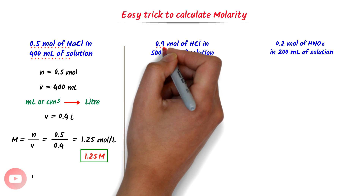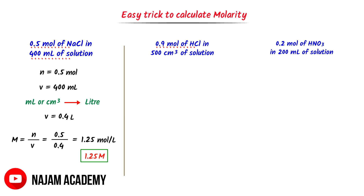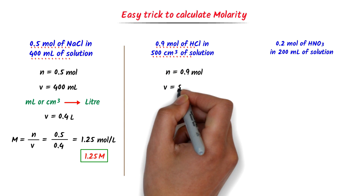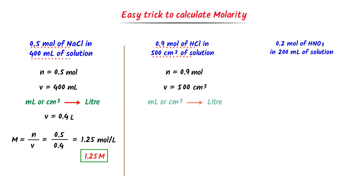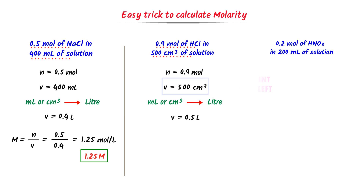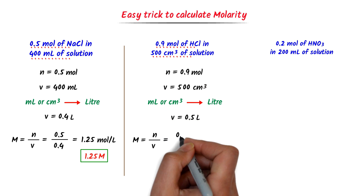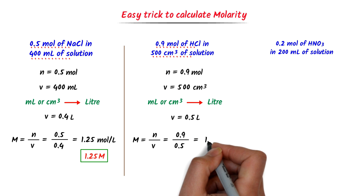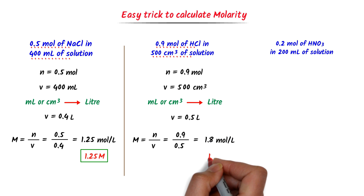Now in this question, 0.9 mol of HCl is dissolved, so the number of moles of the solute is 0.9 mol. Secondly, the volume of a solution is 500 cm³. I convert it to litre by moving the decimal point 3 times to the left, and I get 0.5 litre. We know that molarity M equals N upon V. The value of N is 0.9 mol and the value of V is 0.5 litre. After calculation, I get 1.8 mol per litre, or just 1.8 M.